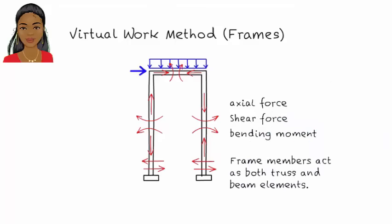When calculating frame displacements, it may be necessary to consider both axial deformation and bending. For many frames, displacement due to axial member forces is significantly less than the displacement due to bending. Consequently, in practice, it is not uncommon to ignore axial deformation when calculating displacement in frames.